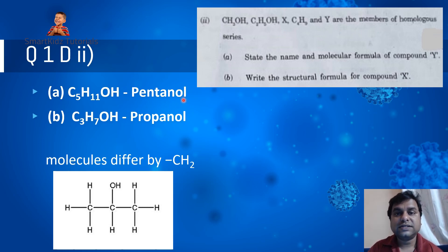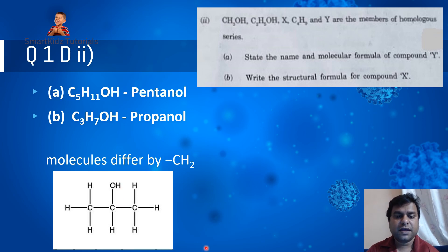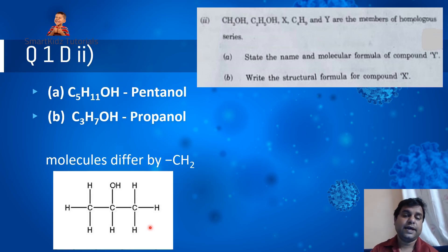They are named with 'ol' as the suffix because of the hydroxyl functional group. For compound X (C₃H₇OH), the structural formula has three carbon atoms as the backbone. We fill the remaining positions with hydrogen atoms, keeping one position for the –OH group. There should be seven hydrogen atoms in total plus one hydroxyl group. You can attach the –OH group at any carbon position.